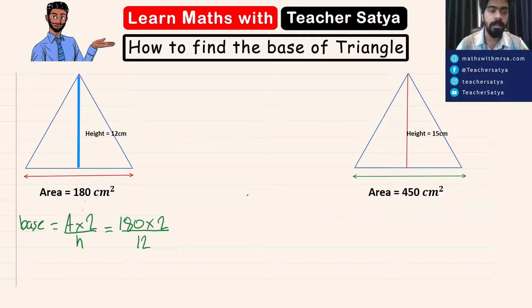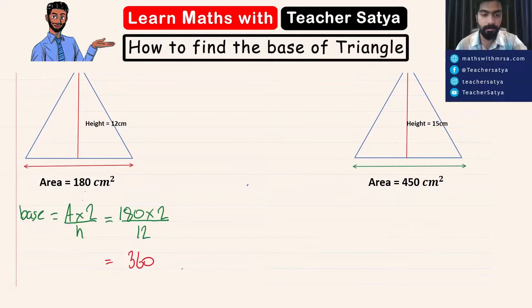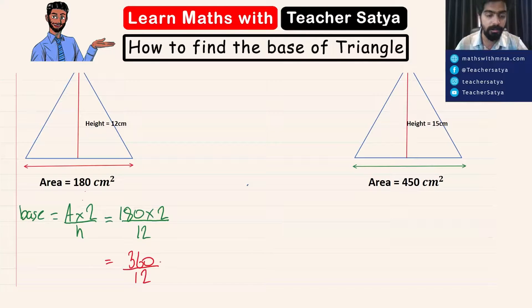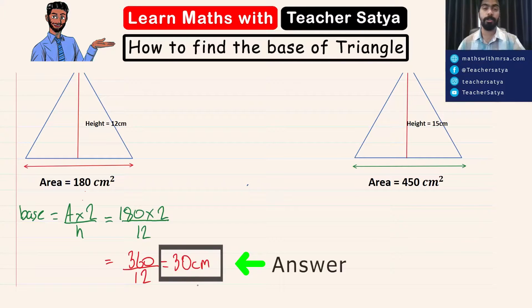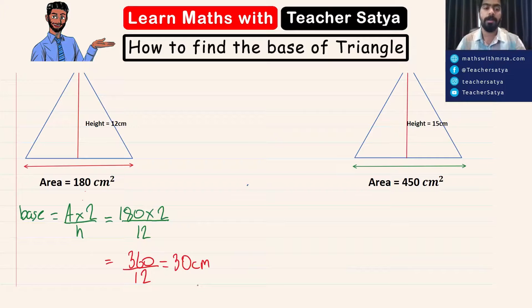Now, 180 times 2 would give us 360 divided by 12, and 360 divided by 12 would give us 30 centimeters. Make sure the unit is centimeter because we're just talking about the base.